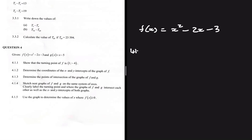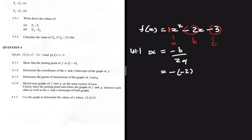4.1.1. Back to the basics: we know that the x at the turning point is equals to minus b divided by 2a. So a is 1, b is minus 2, and c is minus 3. So x equals minus b over 2a, which is minus (minus 2) divided by 2 times 1, giving us x equals 1.